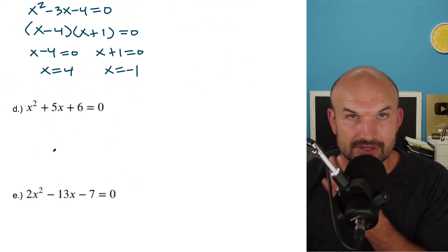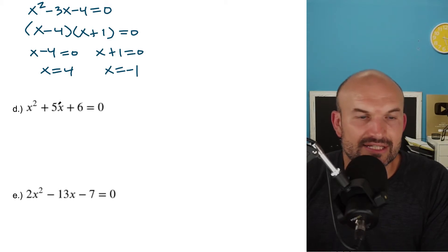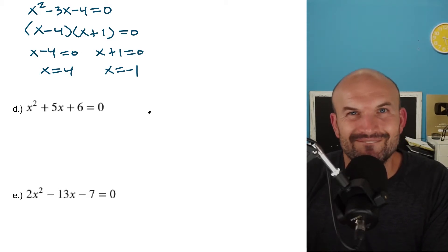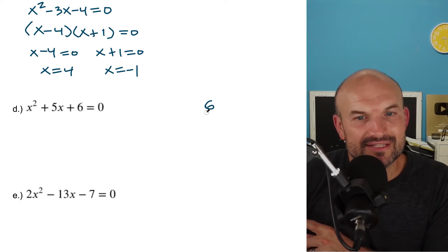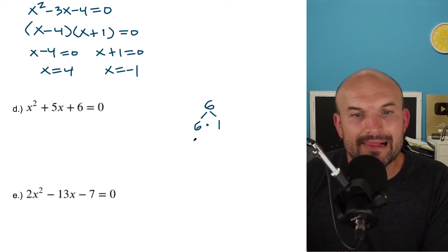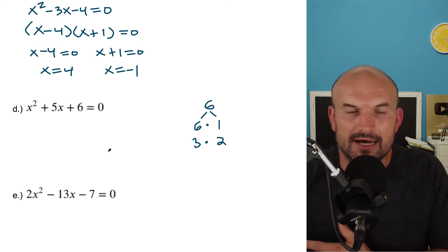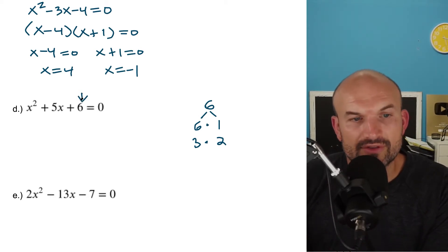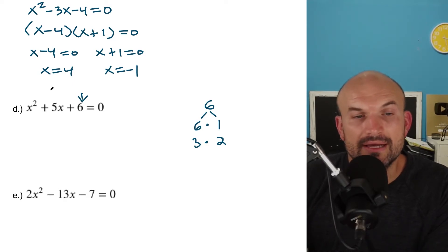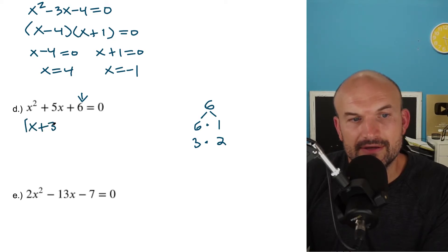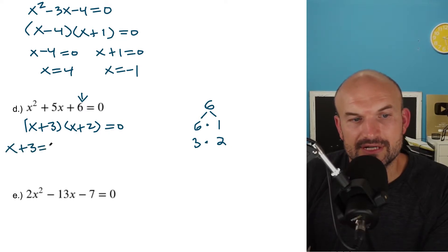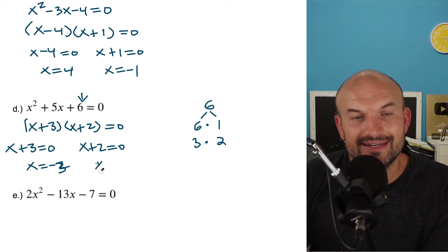In this example, it's already set equal to zero. What two numbers multiply to give me six and add to give me five? Six and one don't work, but what about three and two? Remember there are multiple factors, so it's always helpful to write down all your factors. When the last term is positive, you're looking for the sum of your two factors to equal your middle term. So three and two work. This factors as x plus three times x plus two equals zero, giving x equals negative three and x equals negative two.